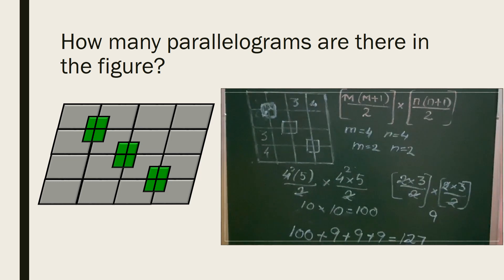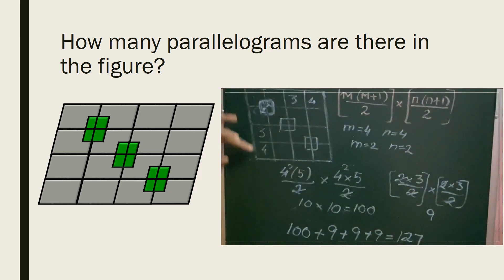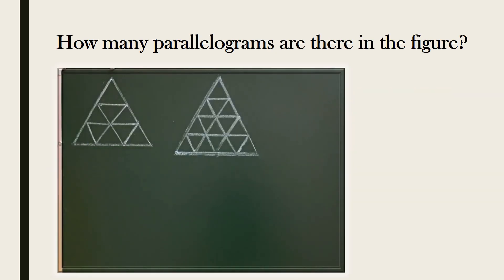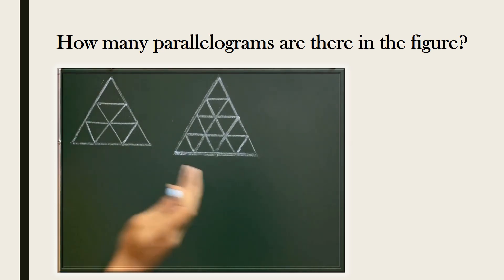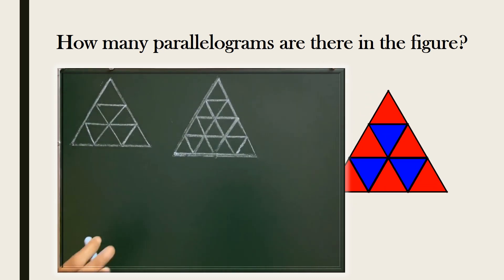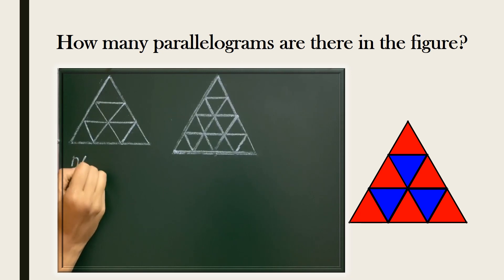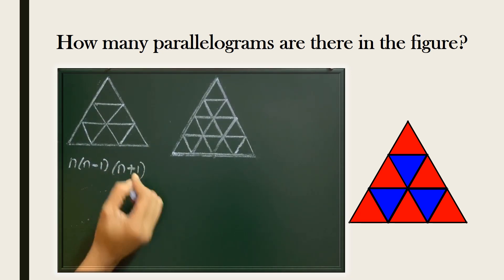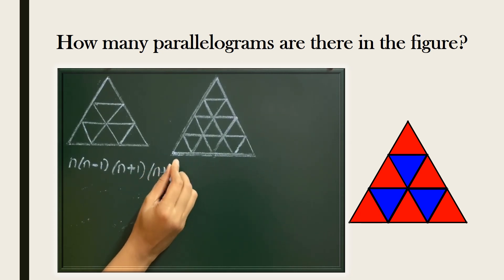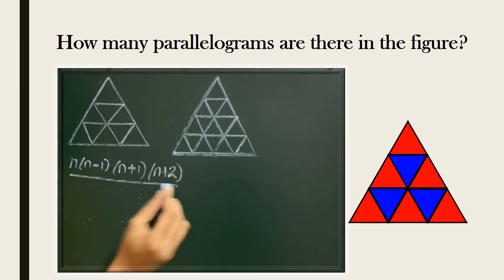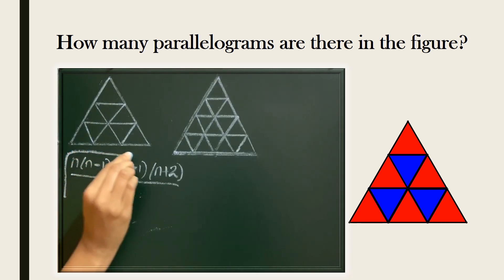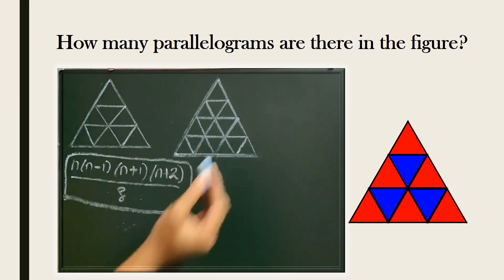To count the parallelograms, check the rows and columns and substitute into the formula. For parallelograms in a triangle, there is a different formula: n(n−1)(n+1)(n+2) divided by 8.